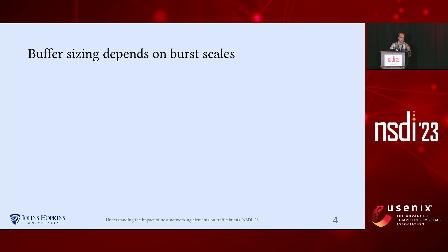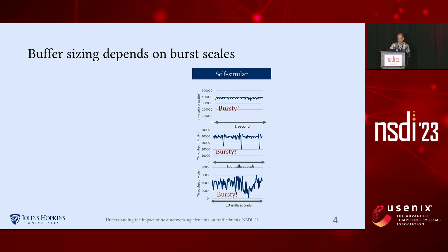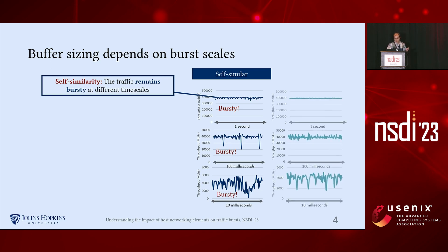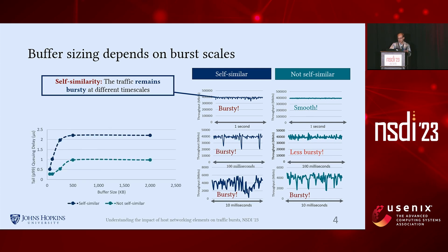If we look at the throughput of a workload at three time intervals — one second, 100 milliseconds, and 10 milliseconds — this traffic has a burstiness that is preserved through different timescales. In other words, this workload presents a self-similar time series. On the other hand, the green traffic has a different burstiness behavior: it becomes smooth at larger timescales. This self-similarity property has implications on network design, like in buffer sizing.